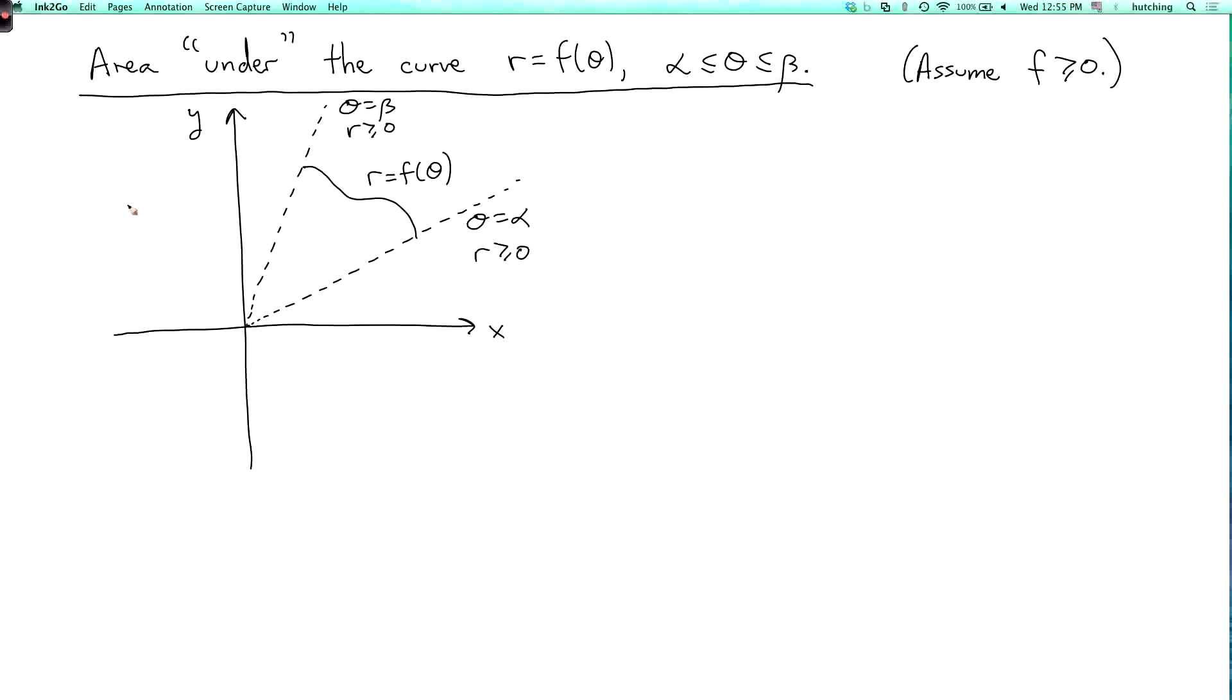Now the way I'm going to do that is I'm going to approximate the region by a bunch of thin pie slices, sort of analogously to approximating the region under a graph by a bunch of skinny rectangles. And the area of my region is the limit as the widths of these pie slices go to zero—let's call that width Δθ—of the sum of the areas of these pie slices.